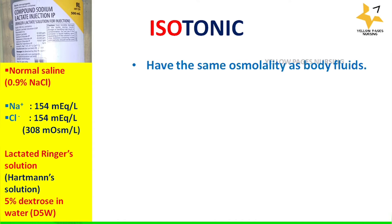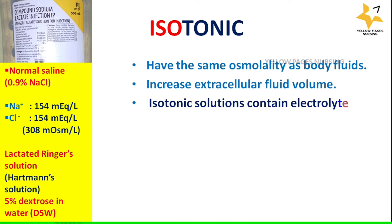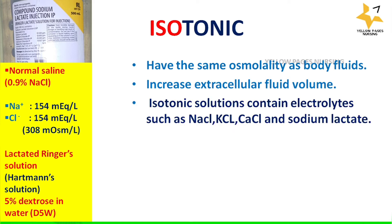Isotonic solution has the same osmolality as body fluids and it increases the extracellular fluid volume. Isotonic solutions contain electrolytes such as sodium chloride, potassium chloride, calcium chloride, and sodium lactate. Normal saline generally contains sodium 154 milliequivalents per liter and chloride 154 milliequivalents per liter, totaling 308 milliequivalents per liter. Other examples include Ringer's Lactate, Hartmann's solution, and D5W.